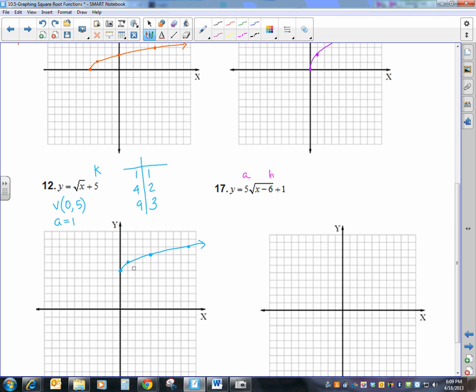Okay, so this is my a. This is my h. And this is my k. My vertex is (6, 1). And a, of course, is 5. So I have my original key points of 1, 4, 9, and 1, 2, 3. And I'm going to change my y values. 1, 4, 9 are my x's. And a is equal to 5. So I'm going to multiply each of these numbers by 5. So 1 times 5, 2 times 5, 3 times 5. And again, this is my over and up.